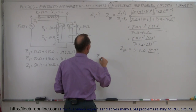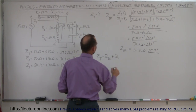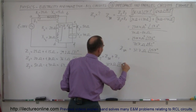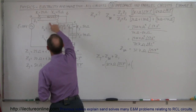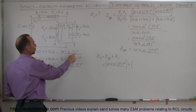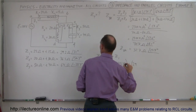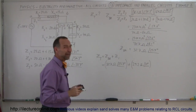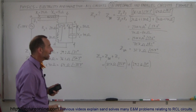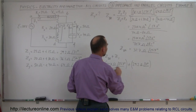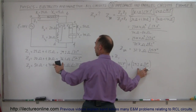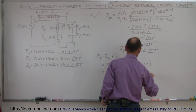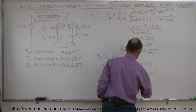Now we're going to add that to Z1, since the branch is now part of a series circuit. Z total equals Z branch plus Z1. Z branch is 32.7 ohms at 25.7 degrees, and Z1 in magnitude-phase angle format is 29.2 ohms at 31 degrees. In this format it's very difficult to add, so we should convert back to complex number format. Z1 we already have: 25 ohms plus j15 ohms.